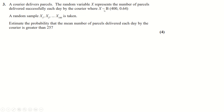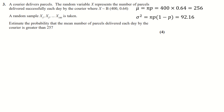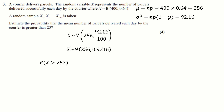Question three is a central limit theorem question involving a binomial distribution. With a sample of 100, we compute mu = NP and variance = NP(1−P). The sample mean is normally distributed with mean NP and variance NP(1−P)/100. We find P(X̄ > 257) = 1 − P(X̄ ≤ 257), remembering to square root the variance to obtain the standard deviation when inputting into the normal distribution calculator.